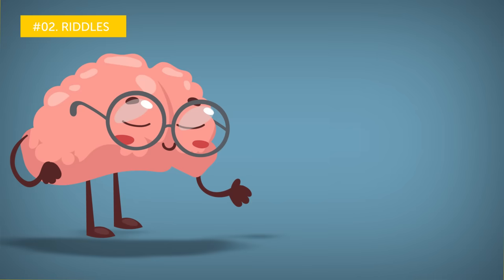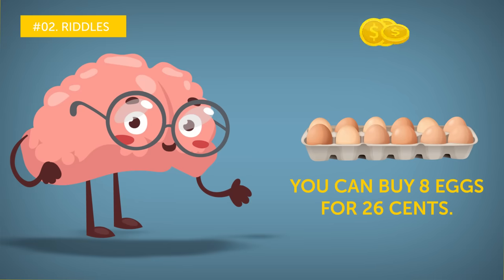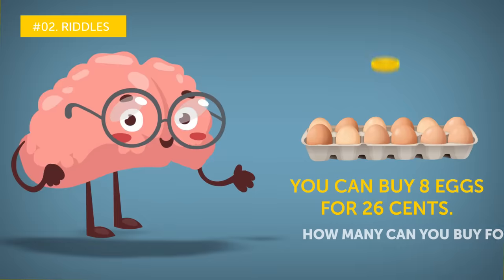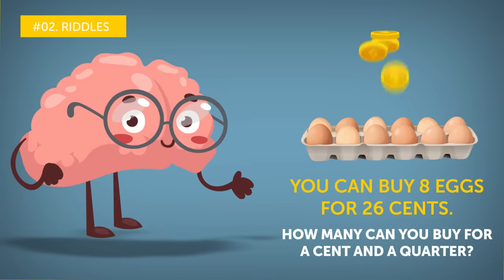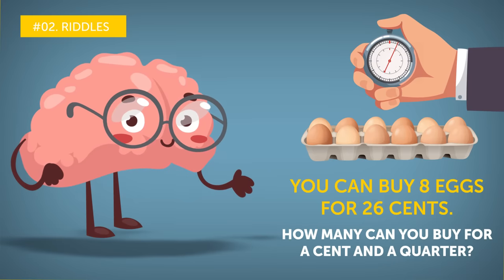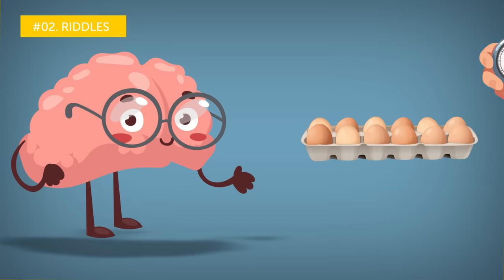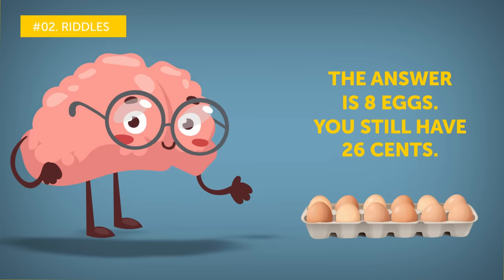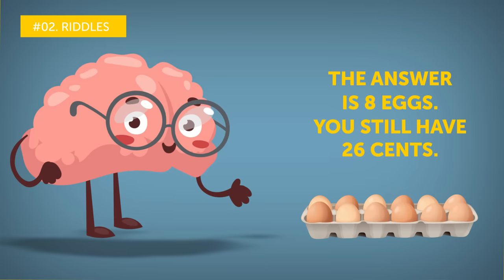Alright, let's try it again. You can buy eight eggs for 26 cents. How many can you buy for a cent and a quarter? Five seconds to think it over. The answer is eight eggs. You still have 26 cents.